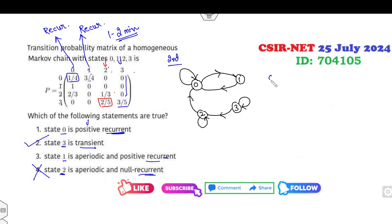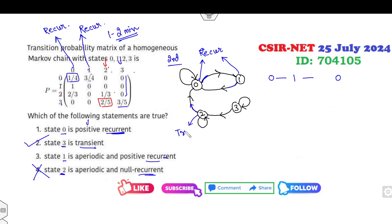Using the diagram: if you leave state 0, can you come back? Yes — go from 0 to 1 and back from 1 to 0. So state 0 is recurrent. State 1: if you leave, can you return? Yes, also possible — so state 1 is recurrent. State 2: if you leave from 2, can you come back to 2 through any path? Not possible — so state 2 is transient.